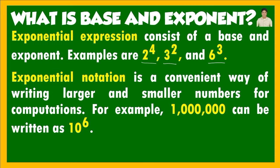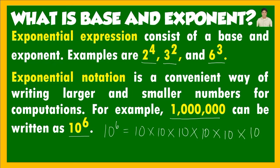Exponential notation is a convenient way of writing larger and smaller numbers for easier computations. We use exponential notation to quickly write larger and smaller numbers. For example, 1 million can be written as 10 raised to the sixth power. When we express 10 raised to the sixth power, that equals 10 times 10 times 10 times 10 times 10 times 10 — because the exponent is 6, we multiply 10 by itself 6 times, and the product is 1 million.